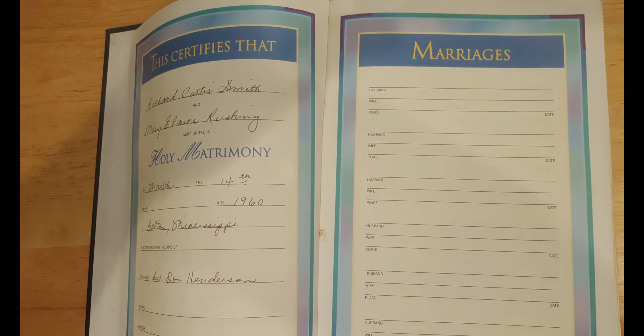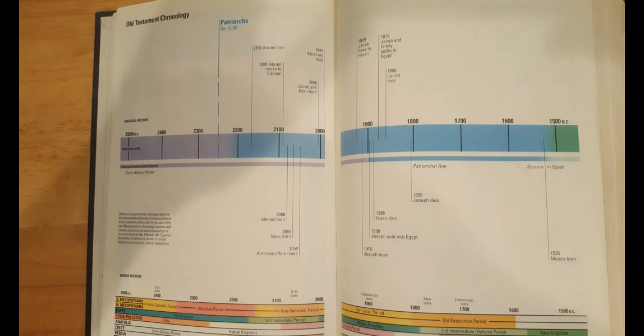Most Bibles begin with a record section. In the record section it shows you who the Bible was given to and who gave the Bible. Oftentimes in the record section there's also a place where there's a record of marriages and family names and sometimes even baptisms.